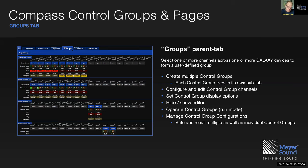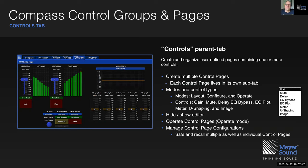If at any time you want to ask a question, please use the raise hand feature in the Zoom chat window. Besides the Groups tab, there is also the Controls tab, where we assign controls of our choosing that operate the groups we created. The controls we can add include gain, mute, delay, EQ bypass, EQ plot, metering, U-Shaping (Meyer Sound's proprietary multi-band EQ), and images.